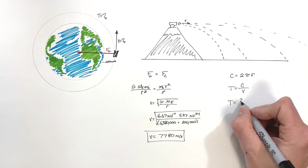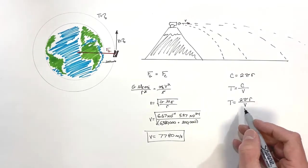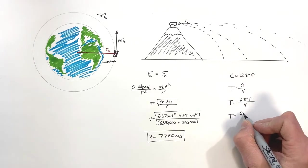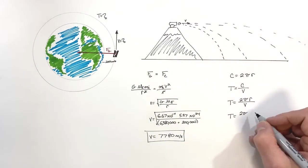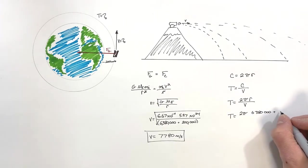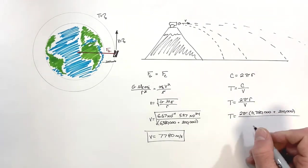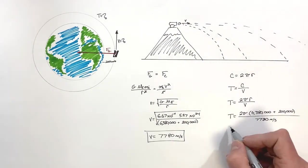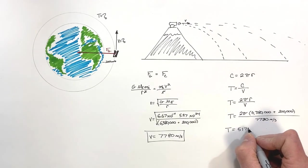The period is 2πr over v. Plugging in numbers: 2π times the total orbital radius of 6,380,000 + 200,000 meters, divided by the velocity of 7,780 m/s. The period works out to 5,178 seconds.